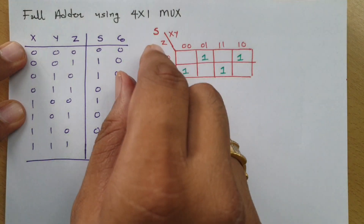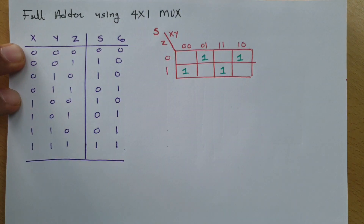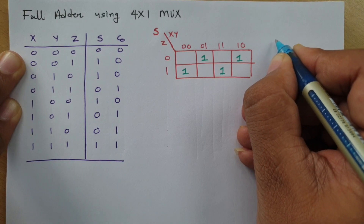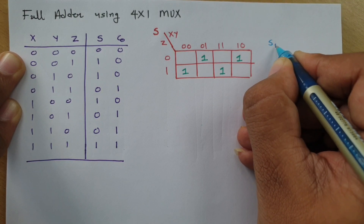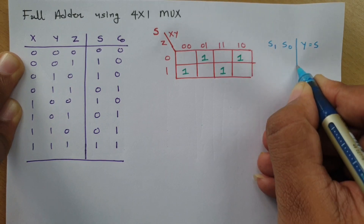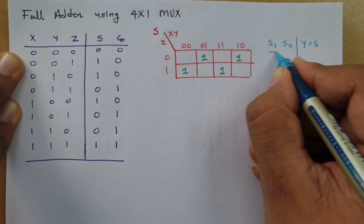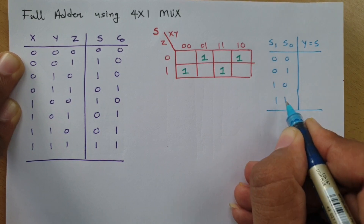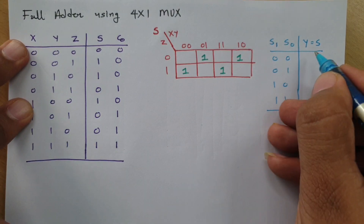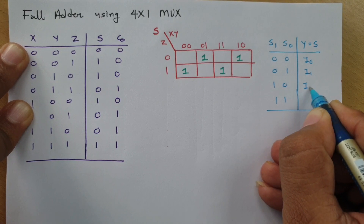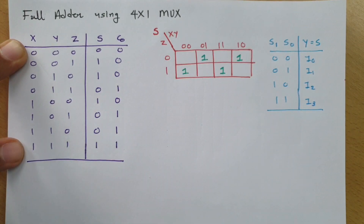To implement sum using a 4x1 multiplexer, we write the truth table for the 4x1 MUX. In a 4x1 MUX, we have two selection lines S1 and S0, and output Y equals sum. The selection line combinations are 00, 01, 10, and 11, selecting inputs I0, I1, I2, and I3 respectively.